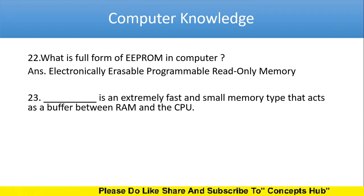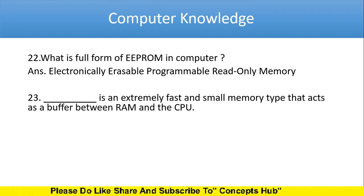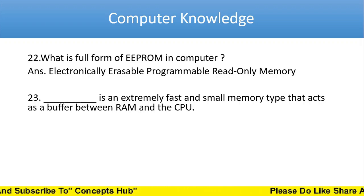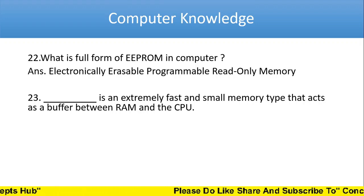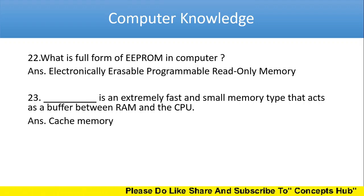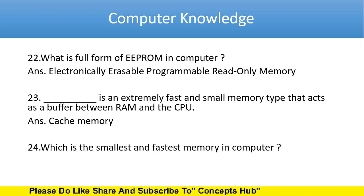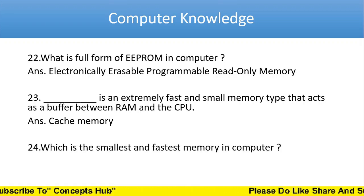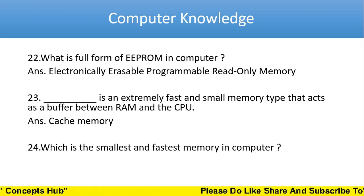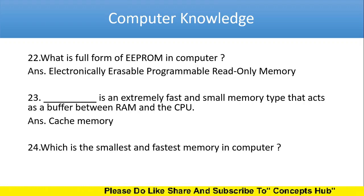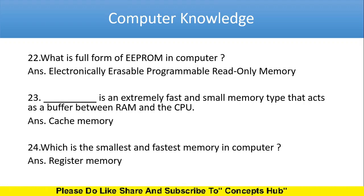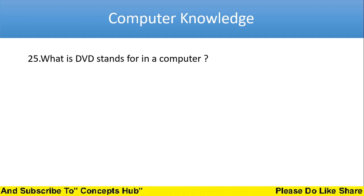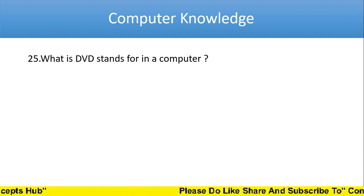Next one: dash is an extremely fast and small memory type that acts as a buffer between RAM and the CPU. The answer is cache memory. Which is the smallest and fastest memory in a computer? The answer is register memory. Next question: what does DVD stand for in computer?